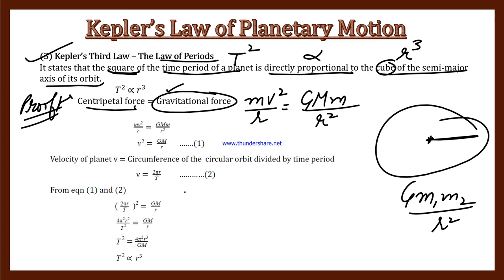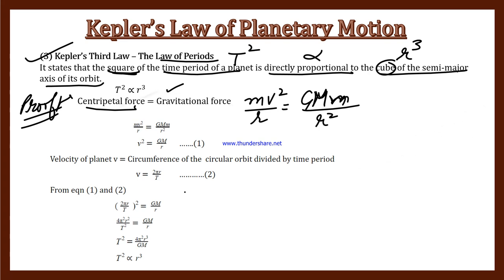One is the sun and one is the planet. The sun has capital M and the planet has small m. So we can write capital M and small m divided by R squared. The R term is coming in.